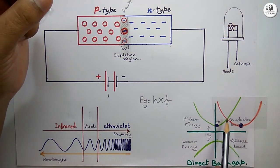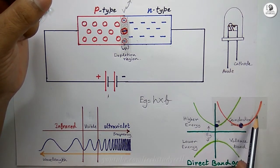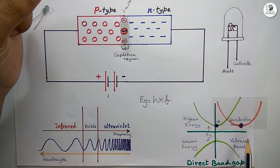For this indirect bandgap semiconductor, you can see the minimum of the conduction band and the maximum of the valence band does not occur at the same point.